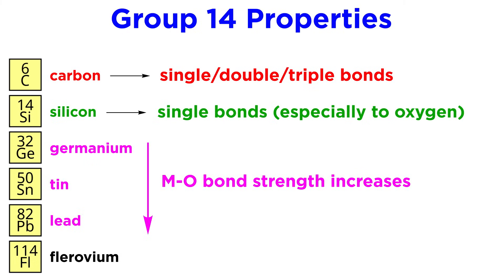So while carbon readily forms double and triple bonds, silicon prefers single bonds, especially with oxygen, and metal-oxygen bond strength increases going down the group.